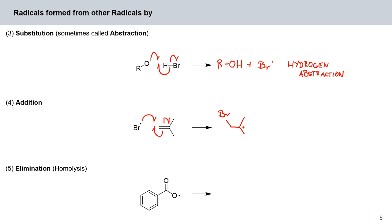And finally, elimination or homolysis. We've met the benzoyl radical already in a couple of examples. This benzoyl radical can undergo homolysis by elimination of CO2. Here we're forming a new carbon-oxygen bond by cleavage of this carbon-carbon bond, generating a phenyl radical and kicking out CO2.